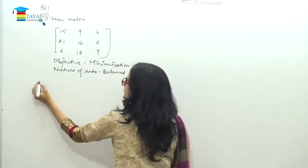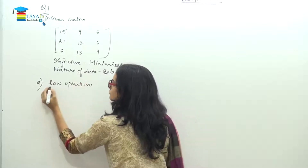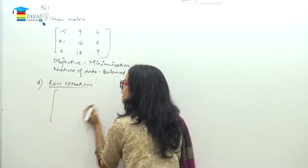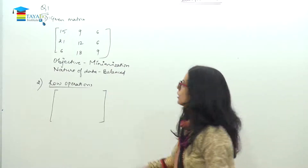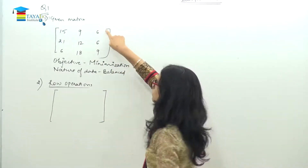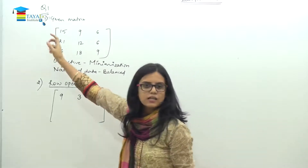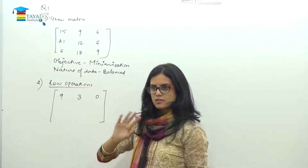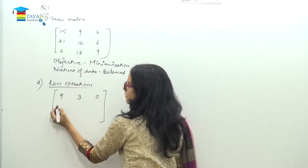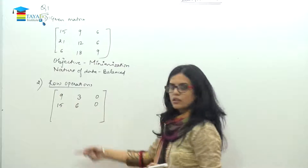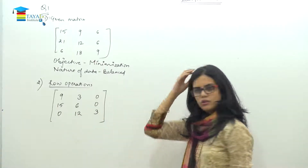Now comes the row operation. In row operation, we choose the minimum element of each row and subtract it from all elements in that row. First row minimum is 6. Subtracting 6: we get 9, 3, and 0. Second row minimum is also 6 — we get 15, 6, and 0. Wait — let me restate the correct values after subtraction.